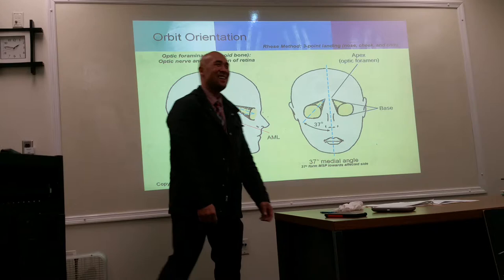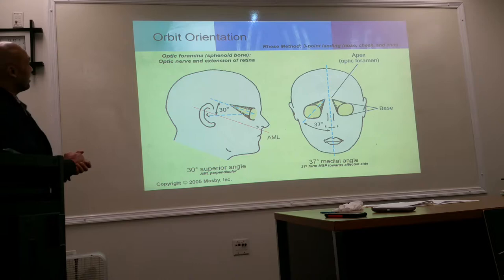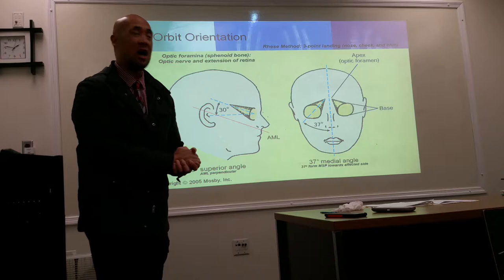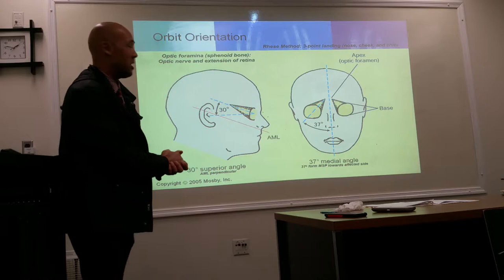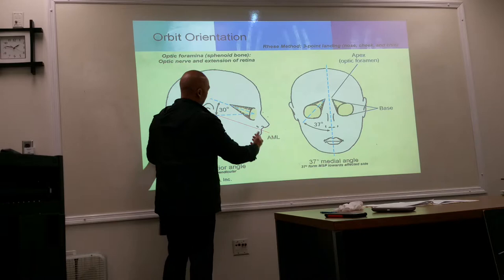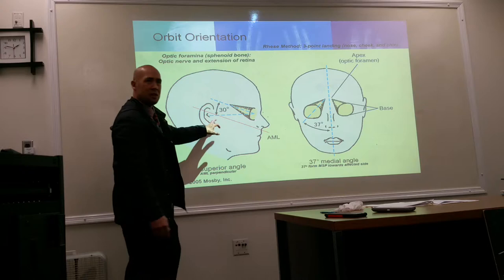Moving on to the Rhese method: the next topic is the orbits in relation to the optic foramina. The optic foramen is the passageway for the orbital nerves and is basically an extension of the retina. The orbit has a 30-degree cephalic angulation in relation to the AML — the imaginary line from the acanthion to the EAM.